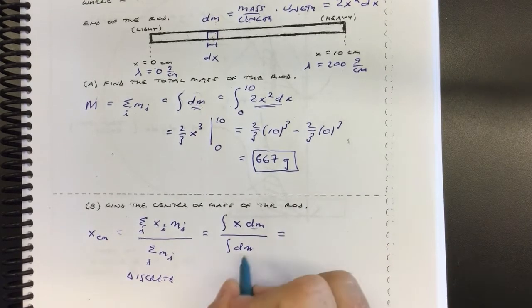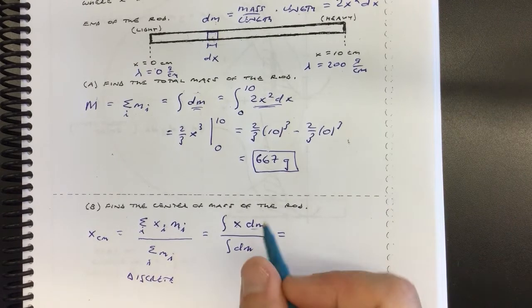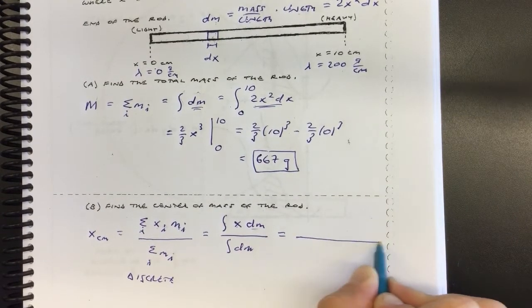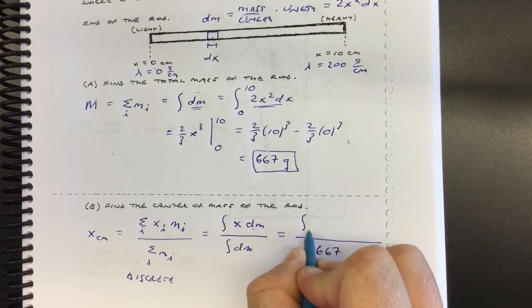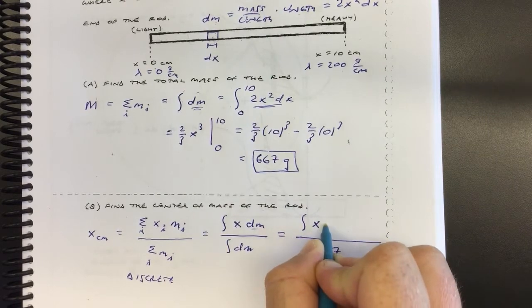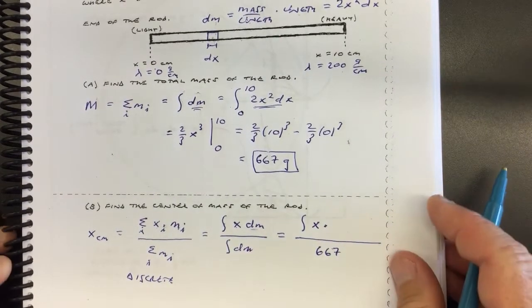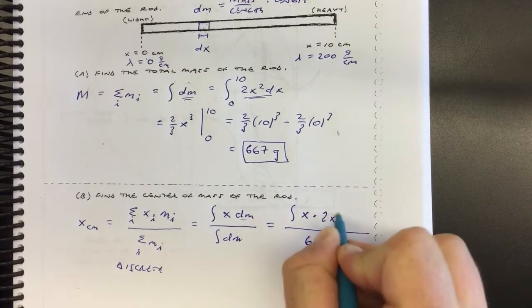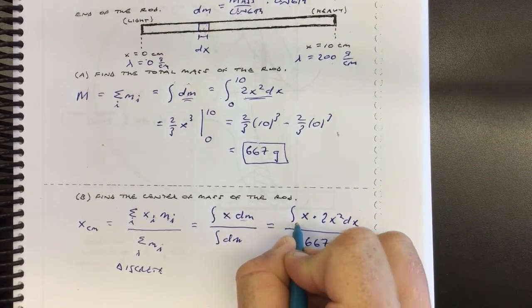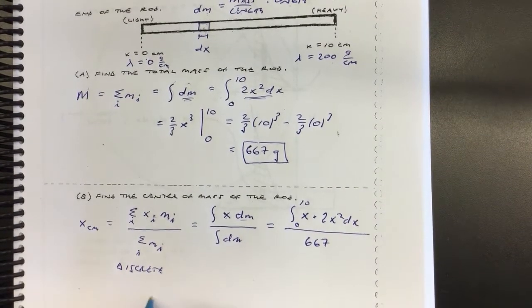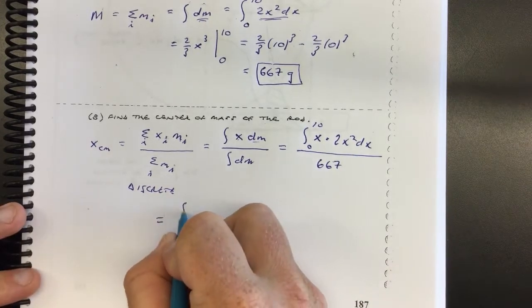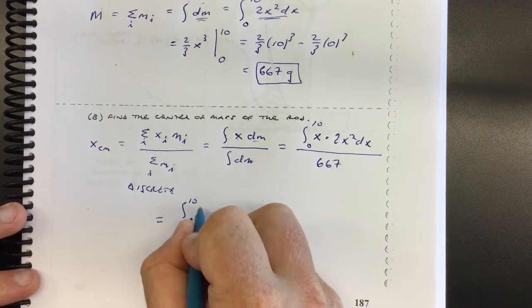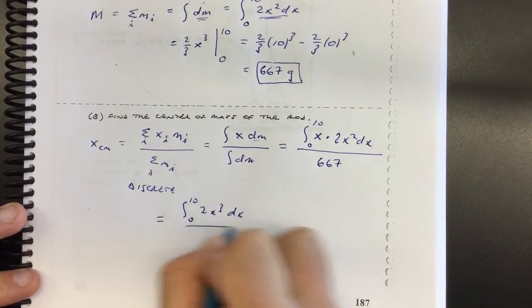Now let's apply it to this problem. The denominator we already know — it's the total mass, 667. The top we still have to integrate. We substitute: x times dm, and dm is 2x squared dx, so the numerator is the integral from 0 to 10 of x times 2x squared dx. That x times 2x squared is just 2x cubed. So we're integrating 0 to 10 of 2x cubed dx, all over 667.